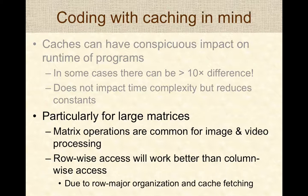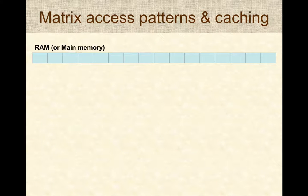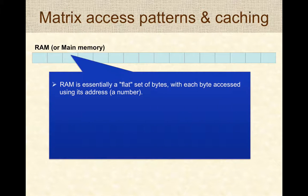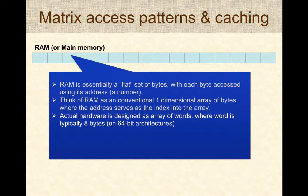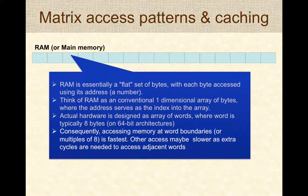When working with matrices, row-wise access will typically work better than column-wise access because matrices tend to be stored in row-major fashion in memory. Think of RAM as a flat one-dimensional array of bytes where the address serves as an index. The actual hardware operates on a per-word basis — typically 8 bytes — so accessing memory at word boundaries or multiples of 8 is fastest; other accesses may need extra cycles to read adjacent words.